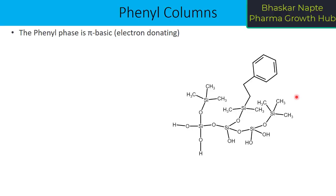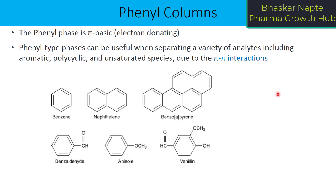The phenyl base is pi-basic. There are three pi bonds present in a benzene ring, and this electron-rich body can actually donate electrons. So phenyl itself becomes the electron-donating functional group. The phenyl type phases can be useful when separating a variety of analytes including aromatic, polycyclic, and unsaturated species due to the pi-pi interaction.